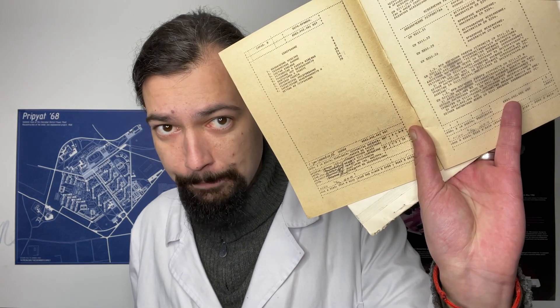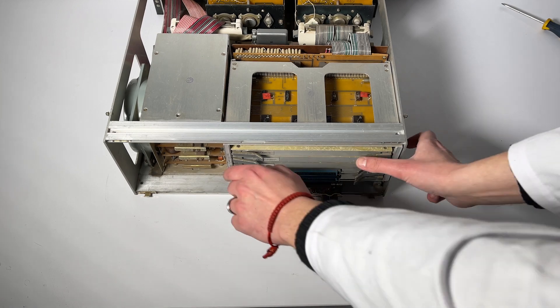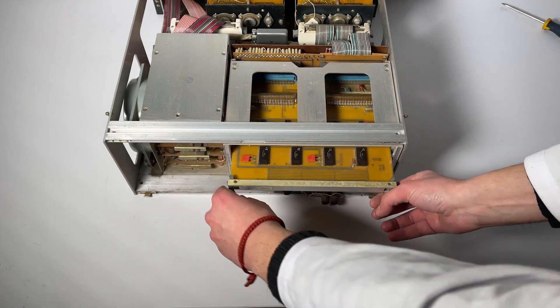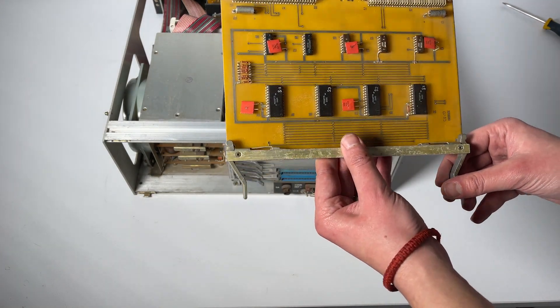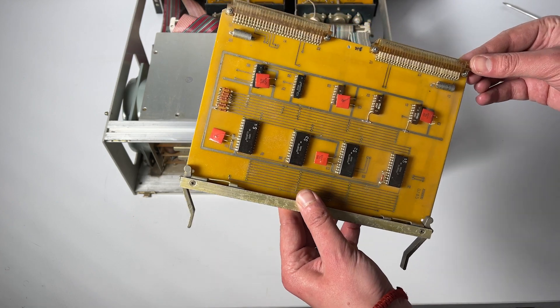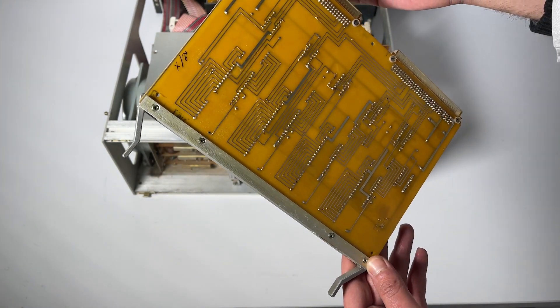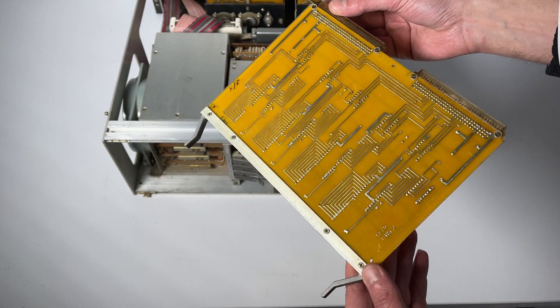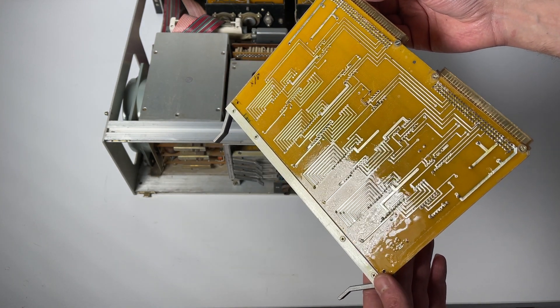The documentation for this device is also not an exception — just look at this beauty. A lot of documentation for the computers we review and other equipment can be found on our Patreon, link is in the description. Now let's look at the crate. If you watched our previous episode about the modem you'll find it pretty familiar. Here are five socket boards. They are all pretty low-integrated because the designers had to fit the crate into the form factor, but we can see a high quality of production — the boards are completely covered with varnish and well-assembled.